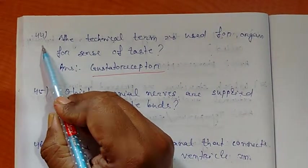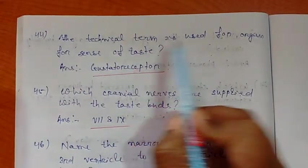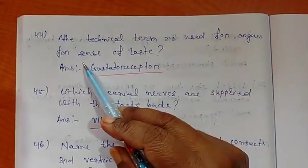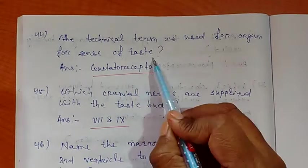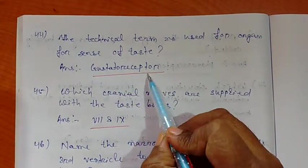Question number 44: What is the technical term used for organ for sense of taste? Answer: Gustatory receptor.